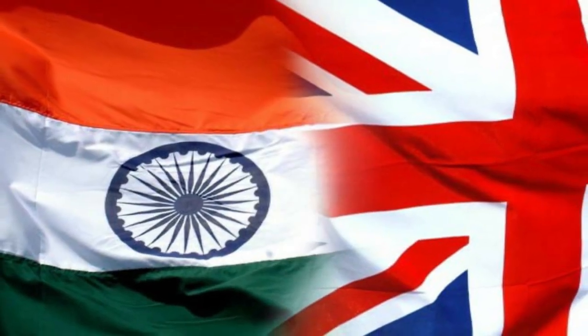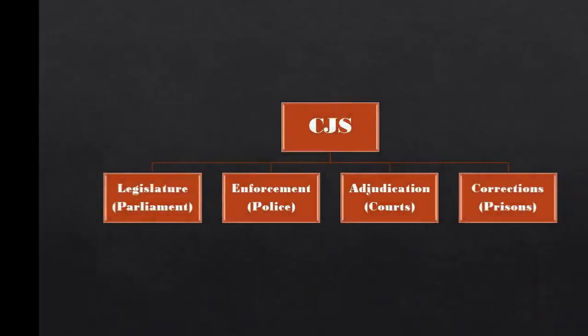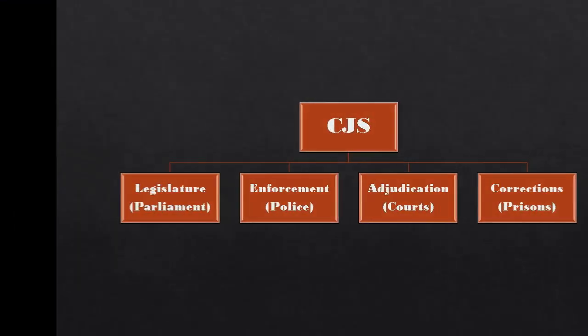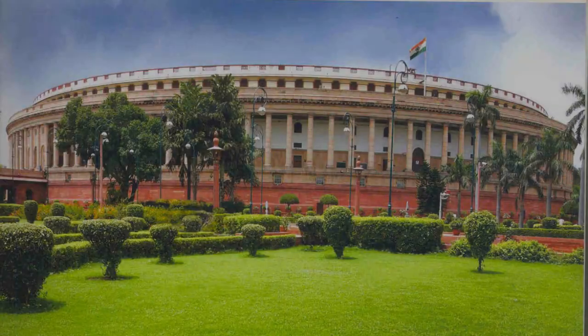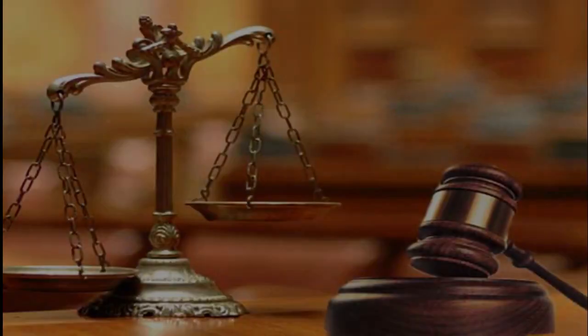The criminal justice system in India is a legacy of British governance and is based on four pillars: 1. Legislature, 2. Enforcement, 3. Adjudication, 4. Corrections.